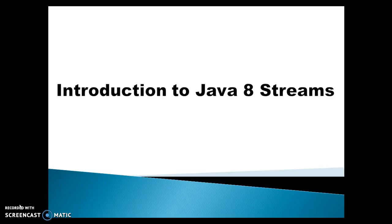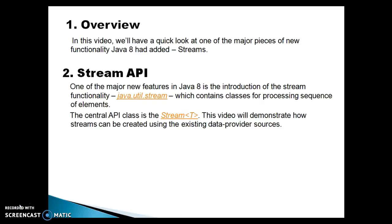That was just an introduction to a stream, which is part of JDK 1.8. In this video, we will have a quick look at one of the major pieces of new functionality Java 8 has added, called a stream. One of the major new features in Java 8 is the introduction of stream functionality, available in the java.util.stream package, which contains classes for processing sequences of elements. The central API class is the stream, which is a generic class.